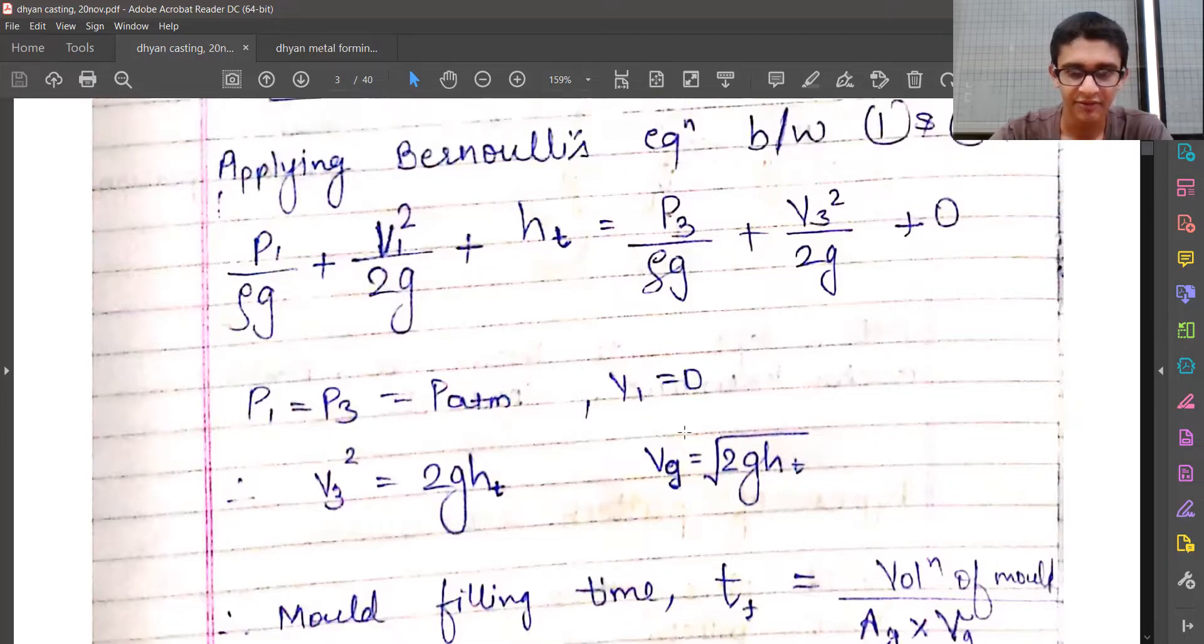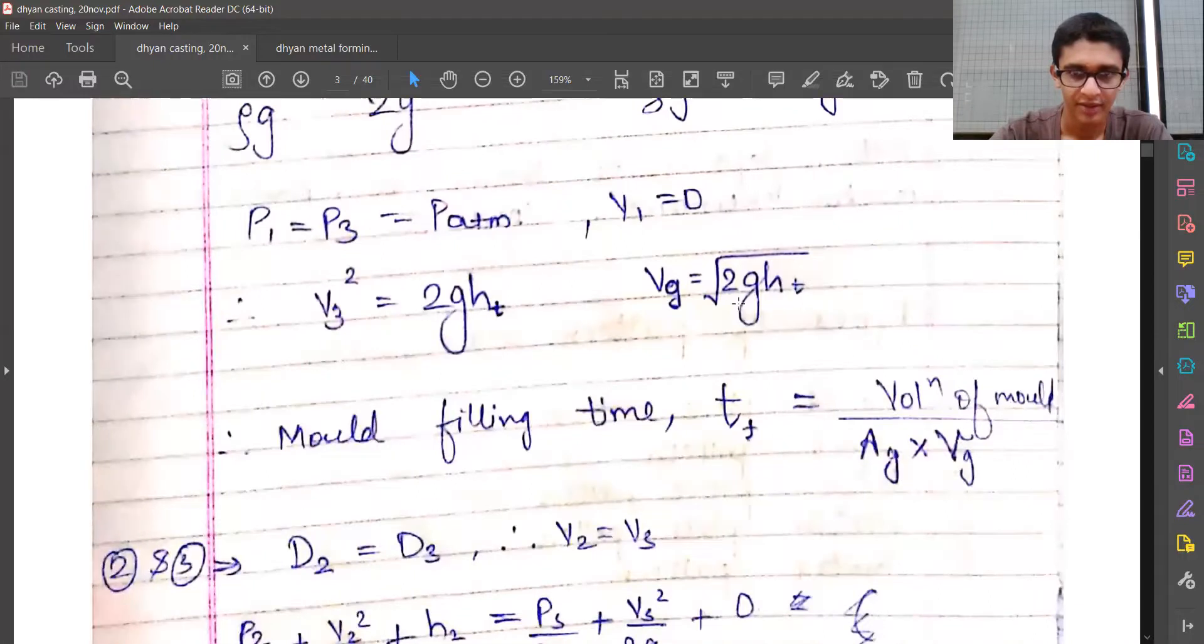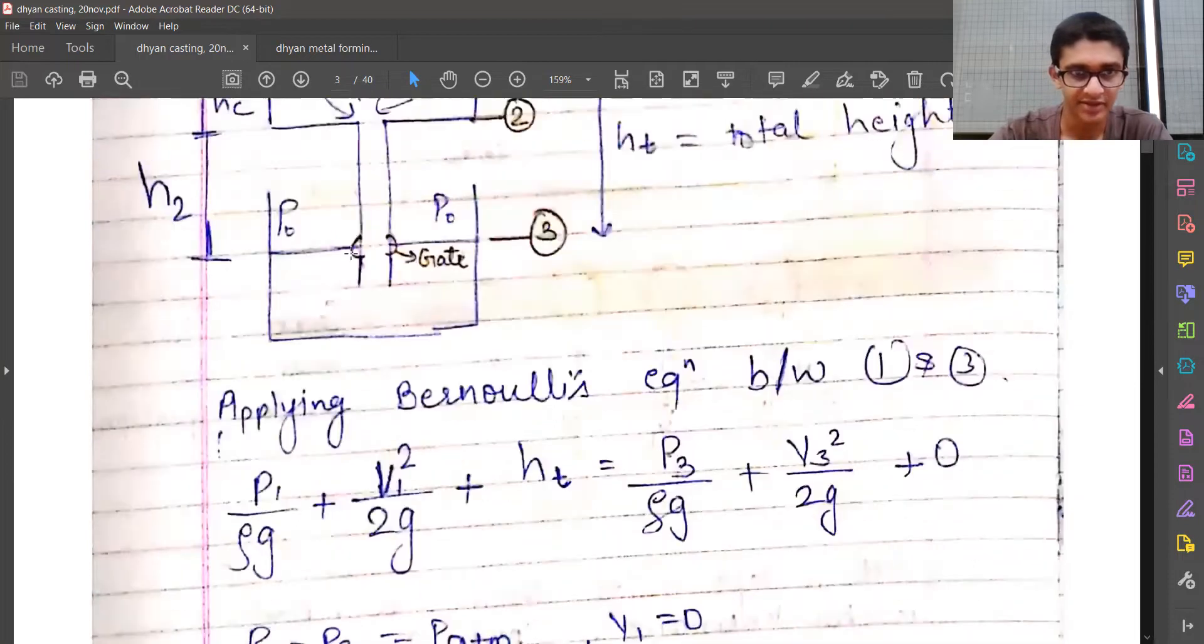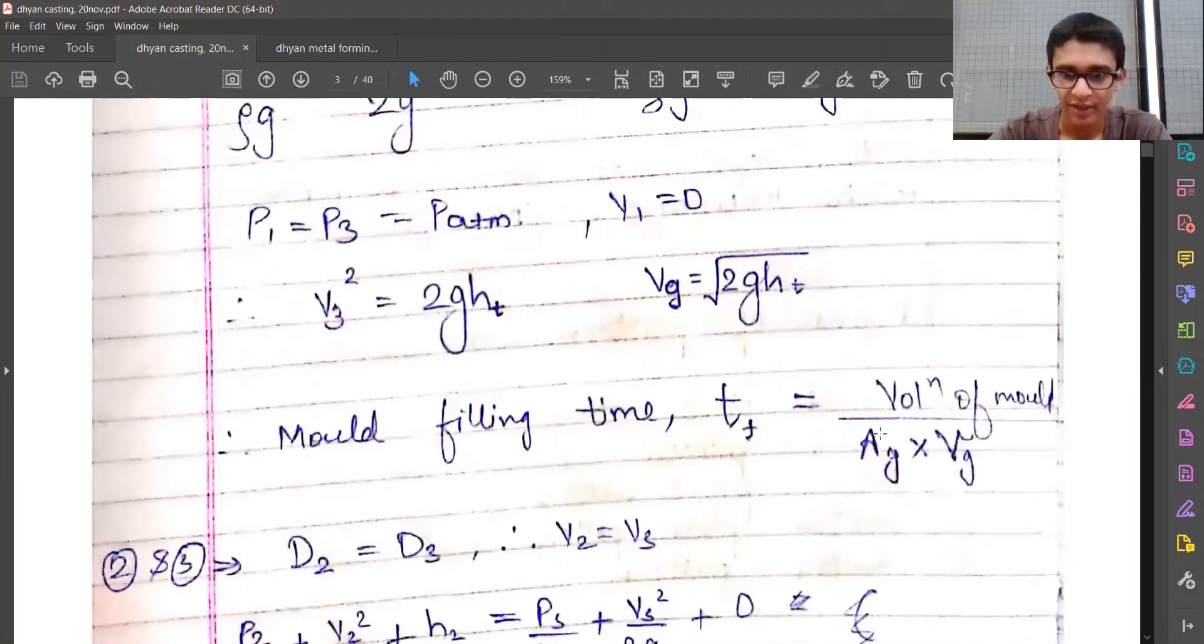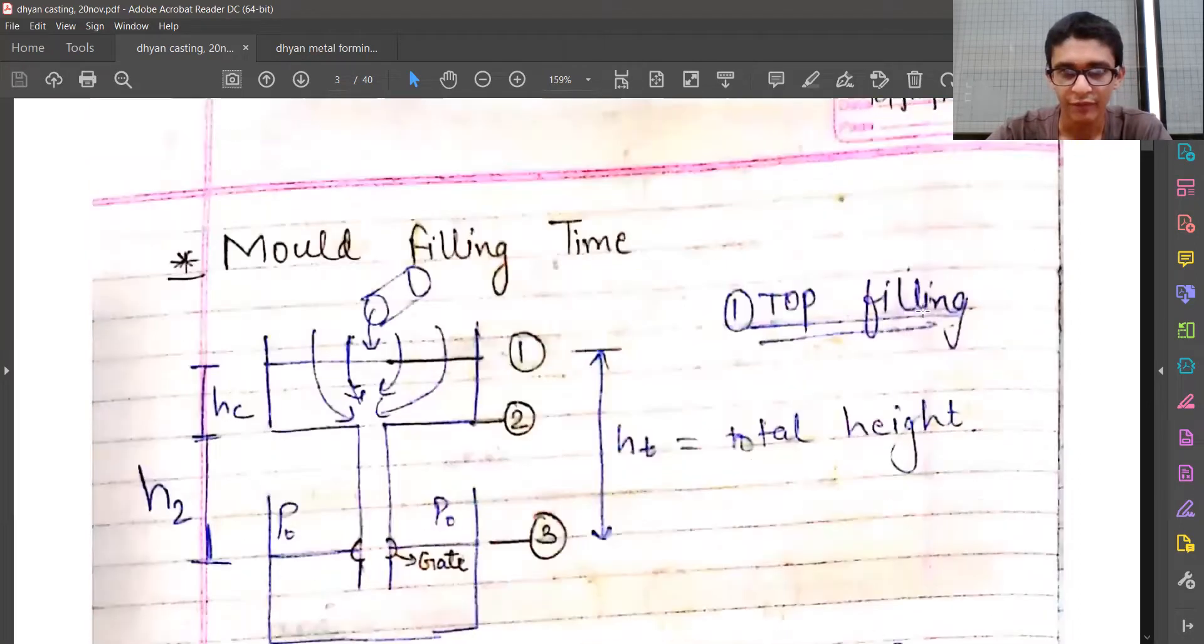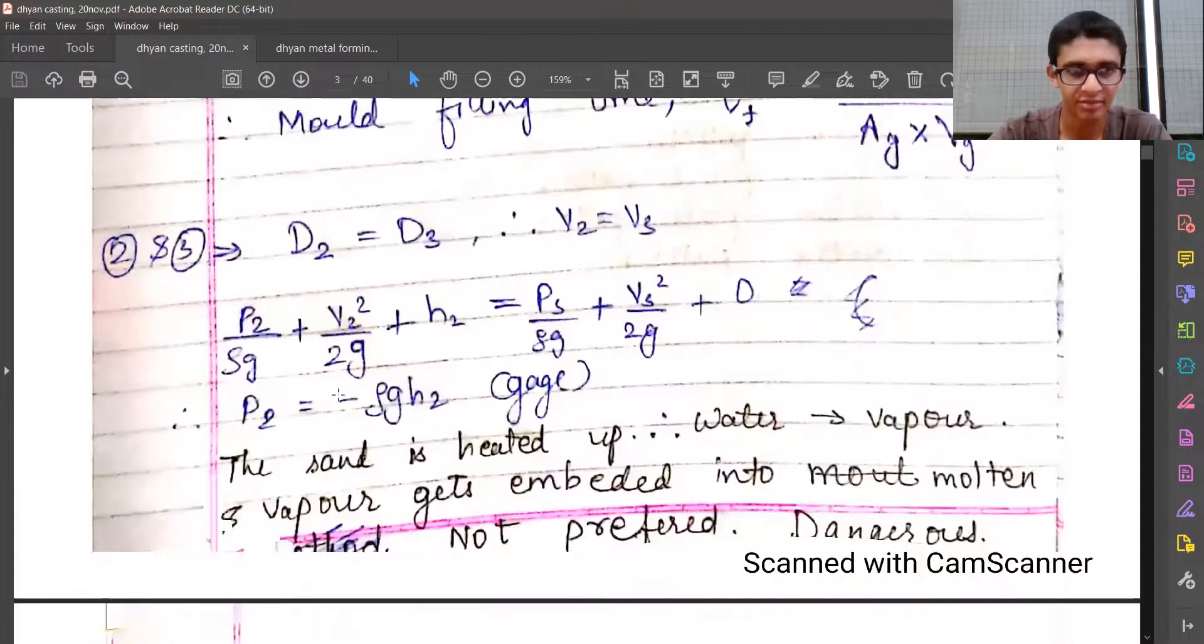Hence, the mold filling time t equals the total volume of the mold divided by the area of the gate times the velocity at the gate, which I derived earlier. That's how the mold filling time can be derived in case of top filling. This is an important concept, but we'll go to this a bit later.